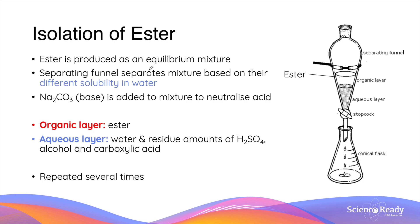To isolate the ester, we use a separating funnel with the help of sodium carbonate. When sodium carbonate is added to the mixture, it neutralizes the residual amount of acid — that is the carboxylic acid and sulfuric acid — to produce soluble salts in a neutralization reaction. When the mixture is then transferred into the separating funnel, two distinct layers form: an organic layer at the top and a clear aqueous layer at the bottom. The aqueous layer contains all the soluble salts and alcohol, while the top organic layer contains the ester. Isolation is achieved by discarding the bottom aqueous layer through the stopcock, leaving behind the organic layer, and this process is repeated several times until only the organic layer remains.